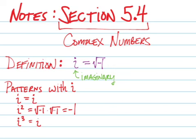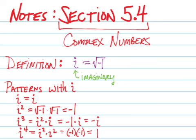If we take i to the third power, we get i squared times i. i squared is negative 1, so we're left with negative i. If I take it to the fourth power, I get i squared times i squared, negative 1 times negative 1, which gives me 1.